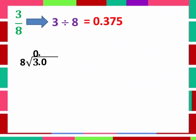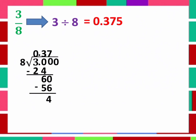30 divided by 8 is equal to 3. And 3 times 8 is equal to 24. Subtract 30 and 24 and the answer is 6. 6 divided by 8 cannot be, so add 0 — bring down 0, so it will become 60. 60 divided by 8 is equal to 7. Then, 7 times 8 is equal to 56. Subtract 60 and 56 and you get 4. Again, add 0 to make 4 become 40. And 40 divided by 8 is equal to 5. 5 times 8 is equal to 40. So, 40 minus 40 is equal to 0. The answer is 0.375.